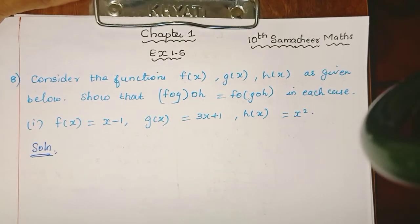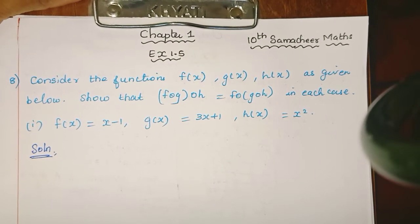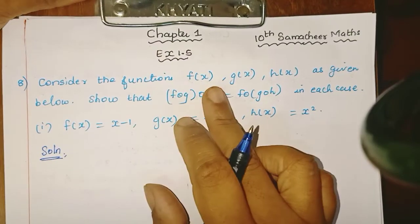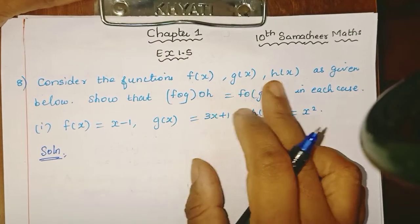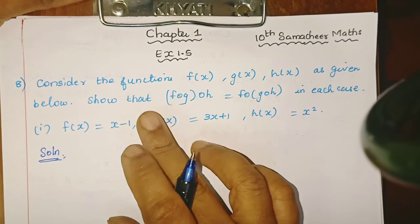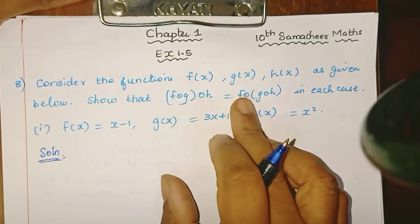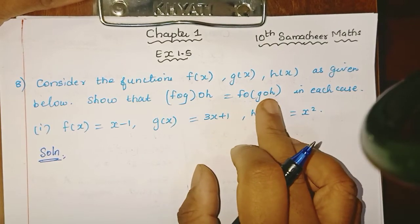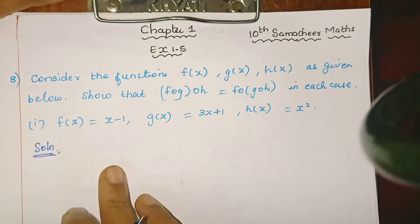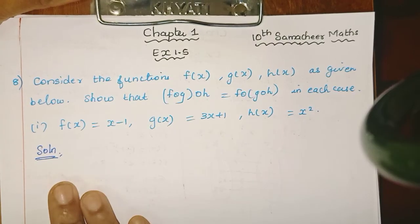Students, in key Chapter 1, Exercise 1.5, 8th sum. Consider the functions f of x, g of x, h of x as given below. Show that f composition g composition h is equal to f composition g composition h in each case. Here there are three subdivisions.